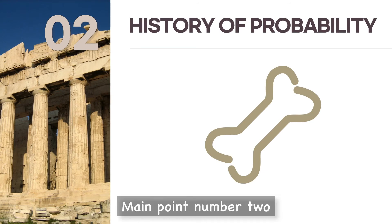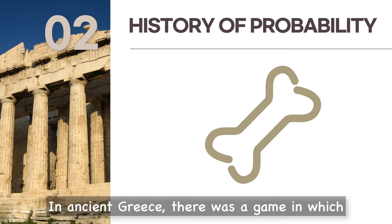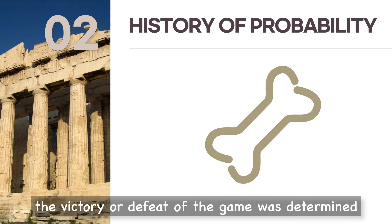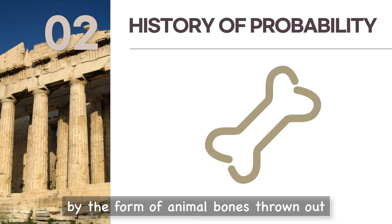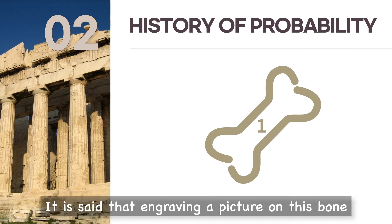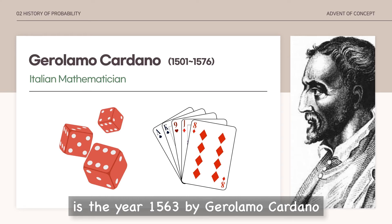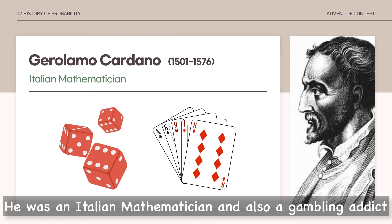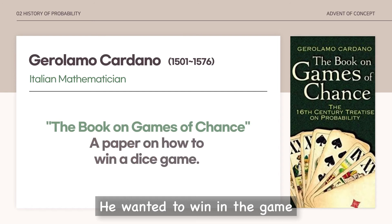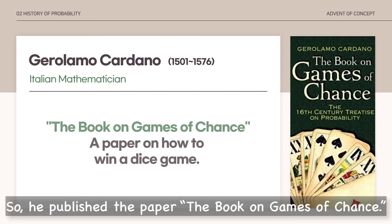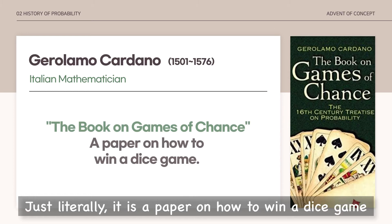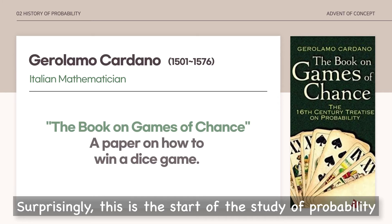Main point number two: the history of probability. In ancient Greece, there was a game in which the victory or defeat was determined by the form of animal bones thrown out. It is said that engraving a picture on this bone was the beginning of the dice. The period when the study of probability started is the year 1663, by Girolamo Cardano. He was an Italian mathematician and also a gambling addict. He wanted to win in the game, so he published the paper 'The Book on Games of Chance' — literally a paper on how to win a dice game. Surprisingly, this is the start of the study of probability.